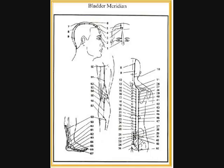UB47: pain in the chest and hypochondriac region, back pain, vomiting and diarrhea. UB48: borborygmus, abdominal pain, diarrhea, pain in the hypochondriac region and jaundice. UB49: abdominal distension, borborygmus, vomiting, diarrhea and difficulty in swallowing. UB50: abdominal distension, pain in the epigastric region and back, infantile indigestion.